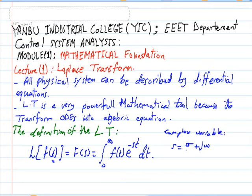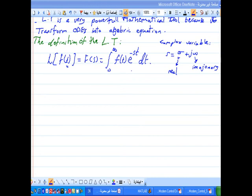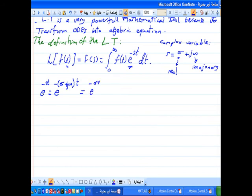Now we will take this term in the Laplace definition, e^(-st), and replace s with its value σ + jω·t. This will equal e^(-σt) · e^(-jωt).